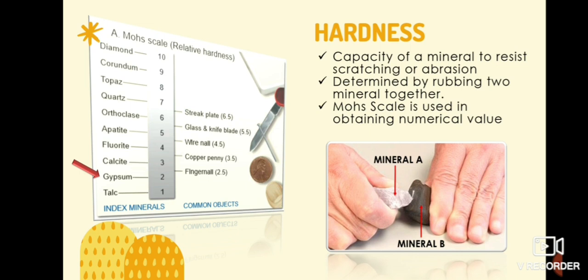The table also shows that the streak plate has a hardness of 6.5, which implies that quartz, topaz, corundum, and diamonds, and other minerals which has higher relative hardness will not produce any streak.